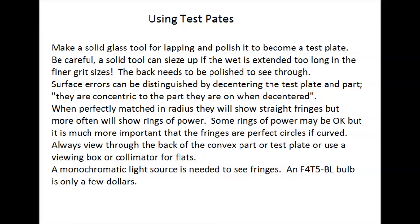Now you only need to polish the test plate long enough to see some fringes. It doesn't have to be fully polished. You may end up seeing some rings of power, circles instead of lines. If the radius were exact match, it would be straight lines, but you're usually allowed some tolerance as far as rings of power goes. But the circular fringes always need to be perfect circles, no matter where they are on the part, or perfect arcs or perfect circles.